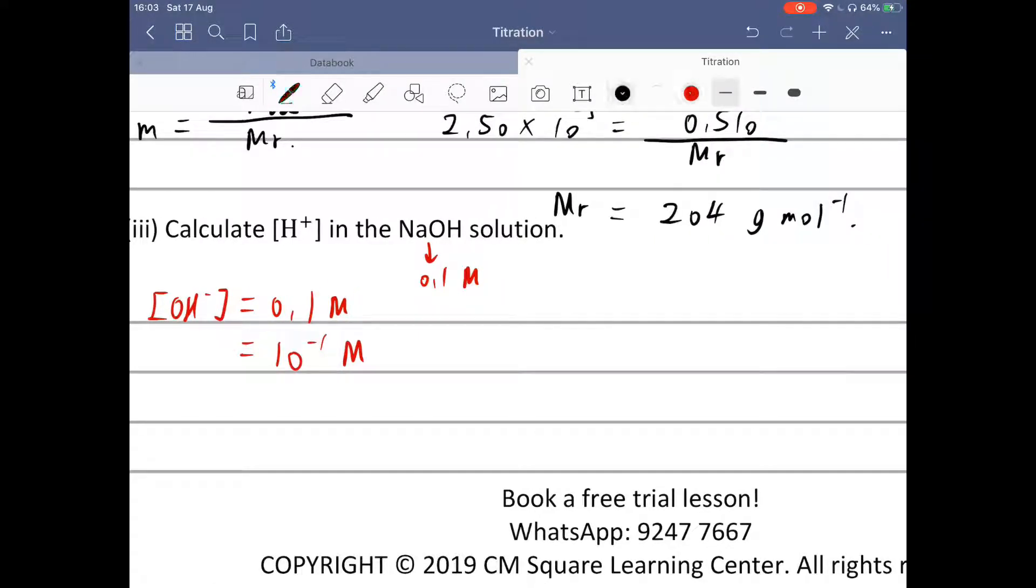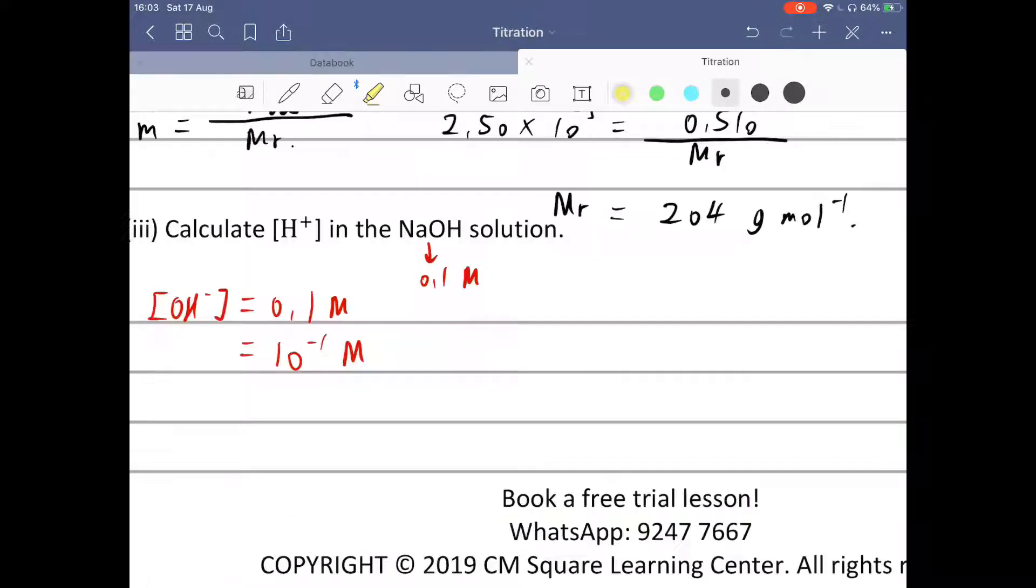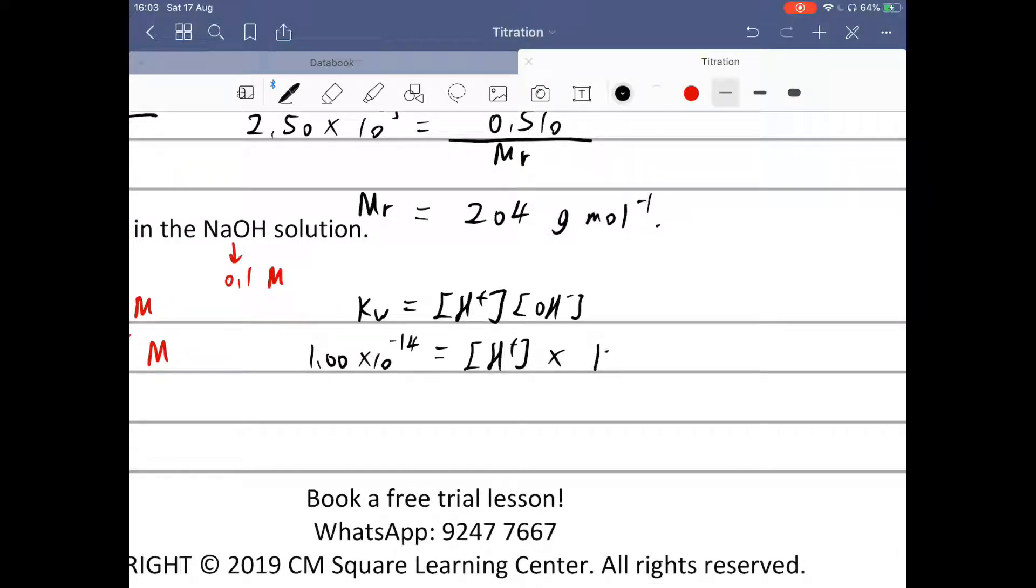Now we use the formula for KW. The value for KW is 1.00 times 10 to the power negative 14. You can find this constant value from the data book section 2, the second last one. So KW equals concentration of hydrogen ion times hydroxide ion. 1.00 times 10 to the power negative 14 equals the concentration of hydrogen ion times hydroxide ion, which is 10 to the power negative 1. So the concentration of hydrogen ion is 10 to the power negative 13 mole per dm³.